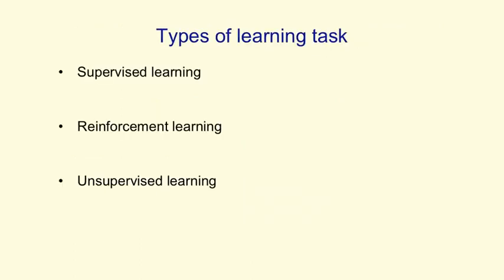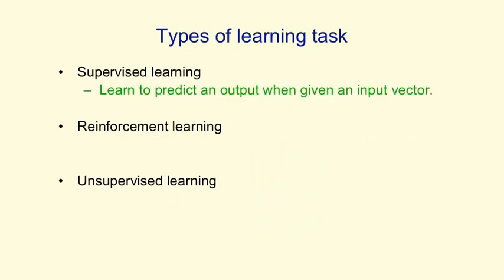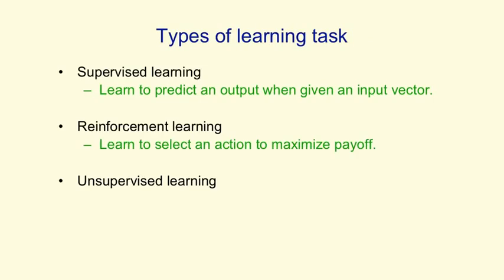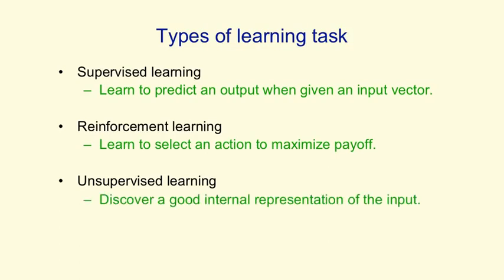Learning can be divided into three broad groups of algorithms. In supervised learning, you're trying to predict an output when given an input vector. In reinforcement learning, you're trying to select actions or sequences of actions to maximise the rewards you get, and the rewards may only occur occasionally. In unsupervised learning, you're trying to discover a good internal representation of the input, and we'll come later to what that might mean.